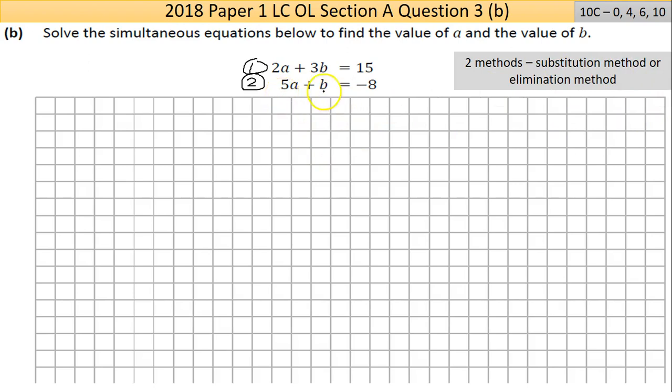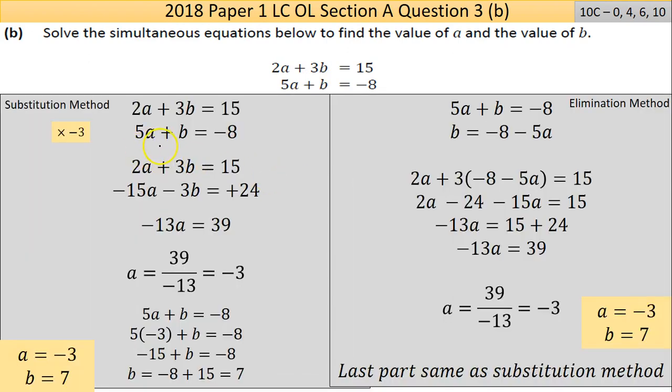So with the elimination method, you're going to try, well, it doesn't matter which one, a or b, I'm going to try to get rid of the Bs, then leave the As on their own, and that equals something, and find out what a is, then use that value of a to find the value of b.